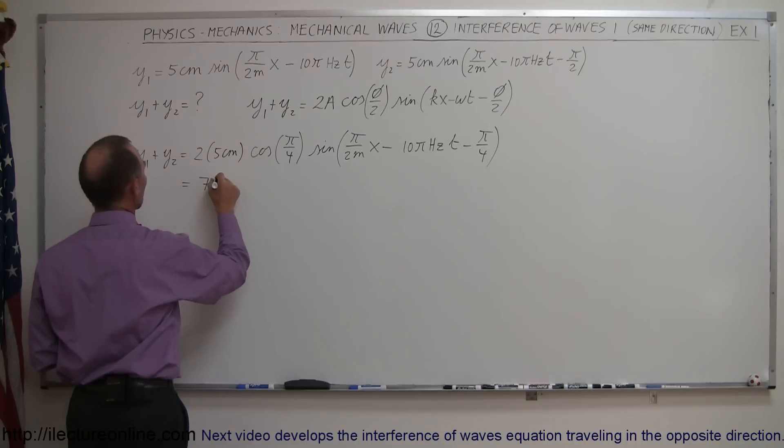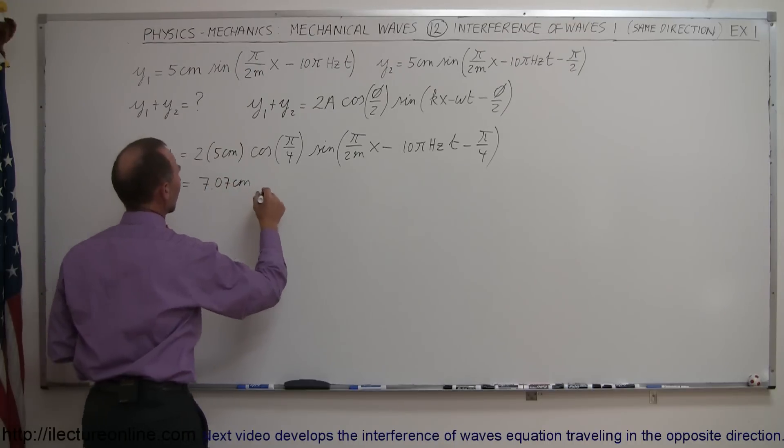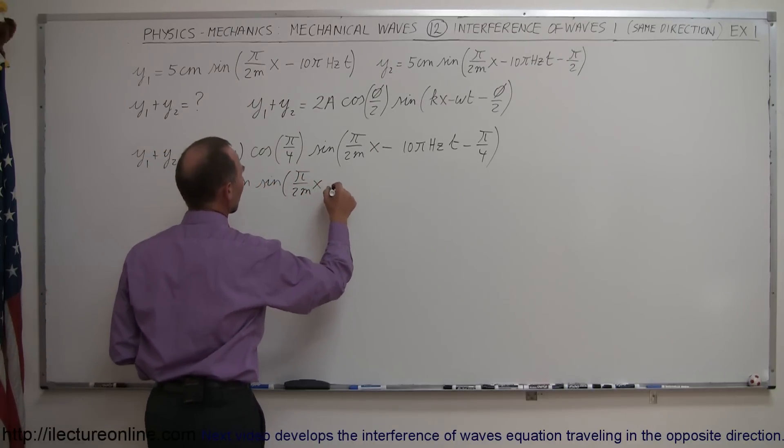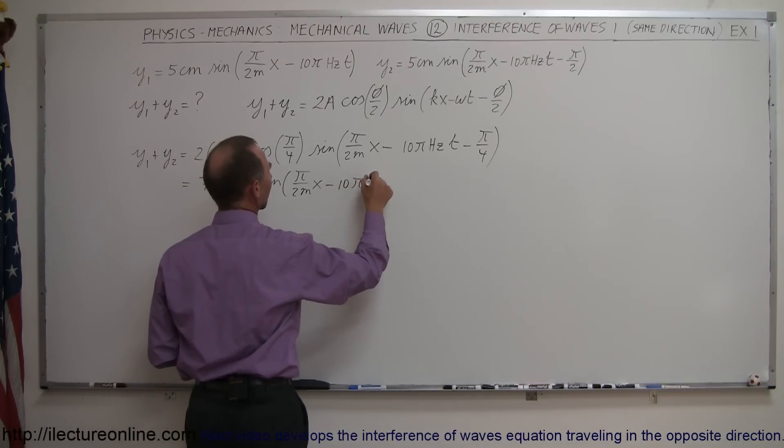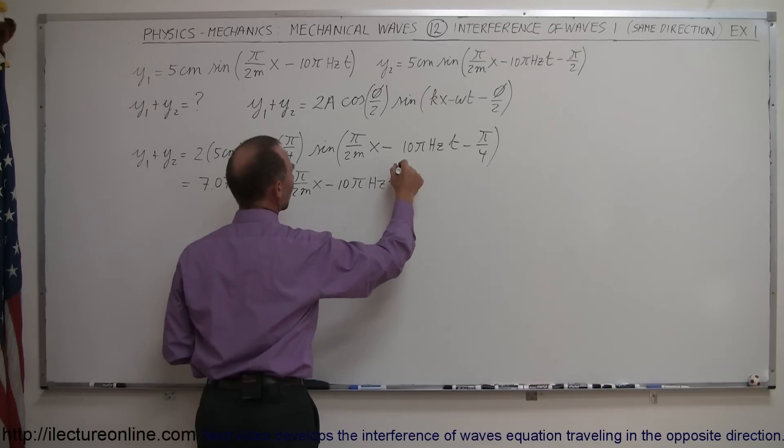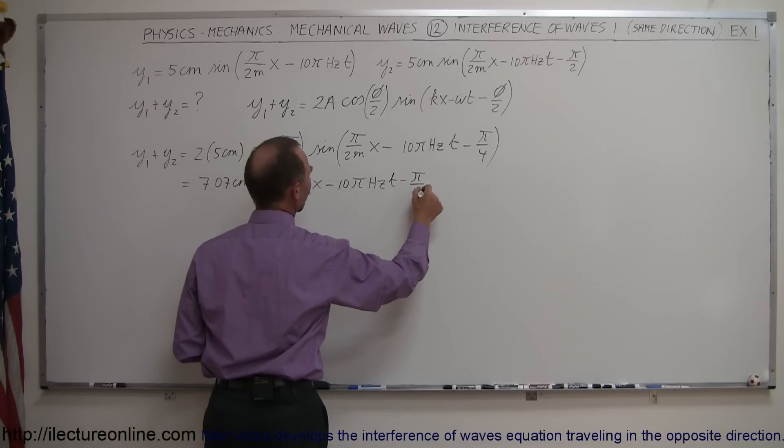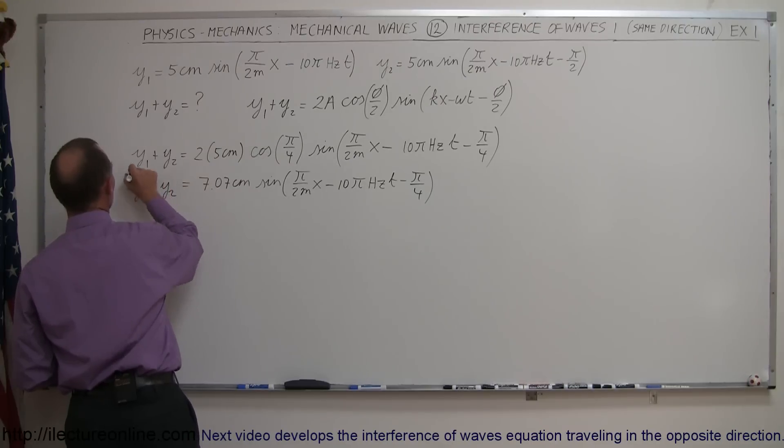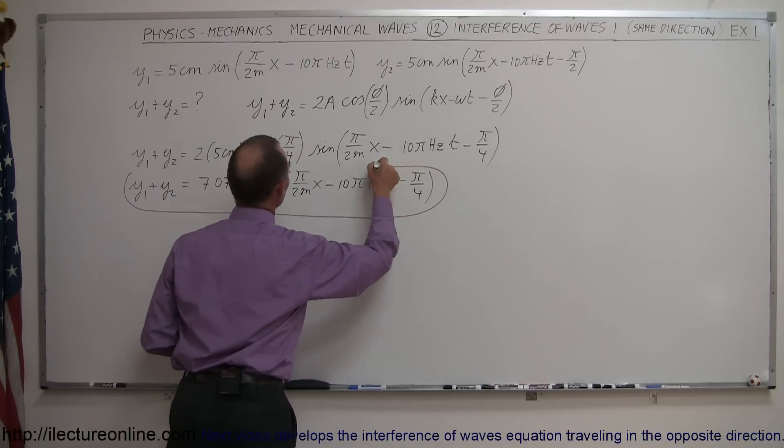So that would be equal to 7.07 centimeters times the sine of pi over 2 meters times x minus 10 pi hertz times t minus pi over 4, and that would then be the final answer for the sum of the two waves.